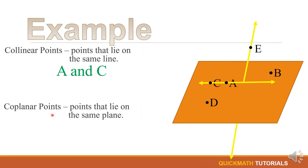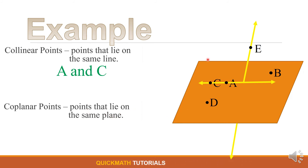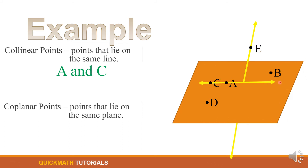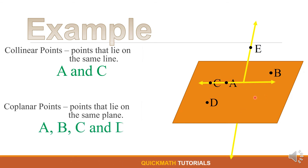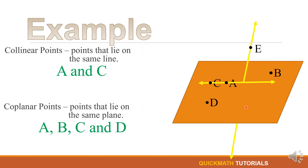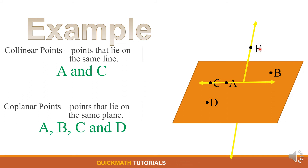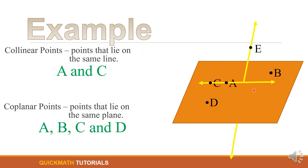Next, for coplanar points — since they are the points that lie on the same plane — here in our illustration, this is the plane. The points that lie on this plane are points A, B, C, and D. Point E is not on this plane, so it is excluded. These four points are what we call coplanar points.